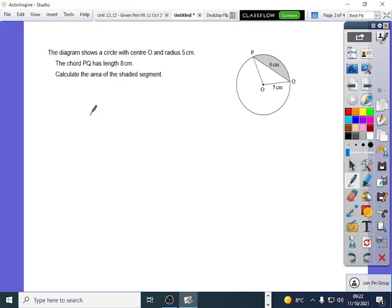So this looks like working at the segment area. Let's have a go. The diagram shows a circle with center O, radius 5cm, so I'm just going to put 5 there too. The chord P to Q is 8cm. Calculate the area of the shaded segment.